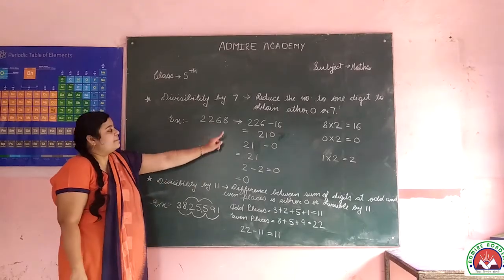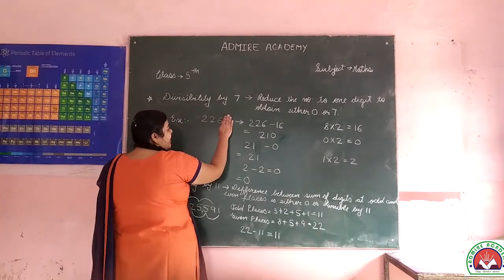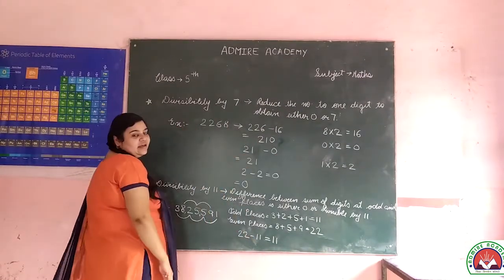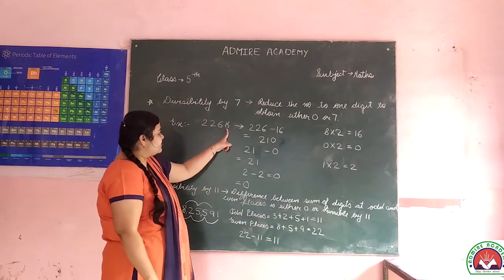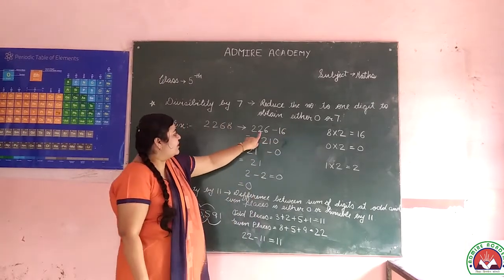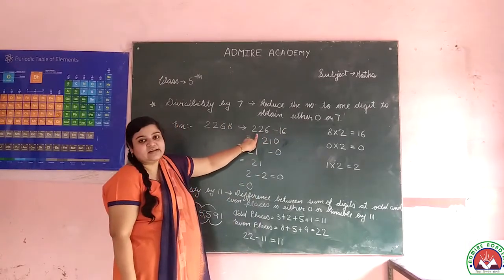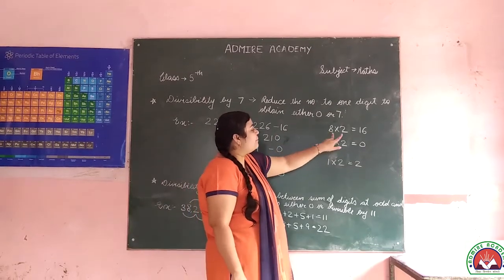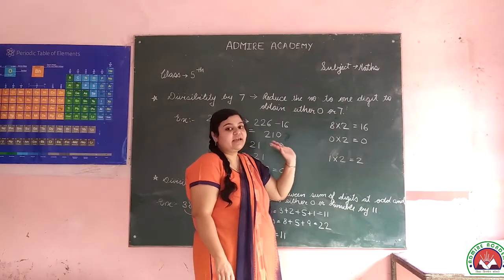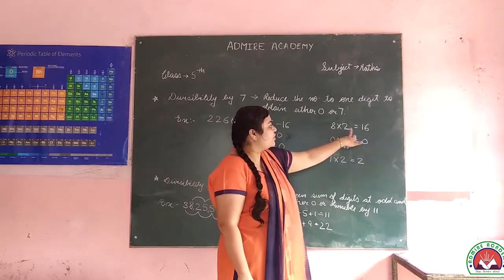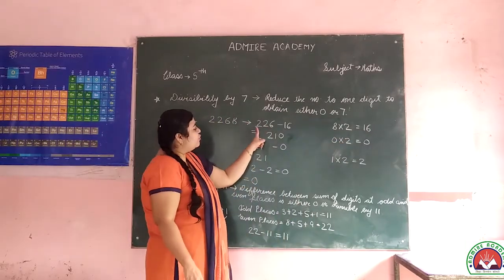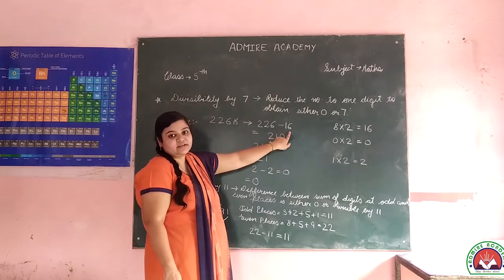Now, first of all, we have to reduce the number to one digit. So for 2268, we take the last digit: 8 into 2 is equal to 16. Now this number is two digits, so we have to reduce it further to one digit.